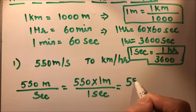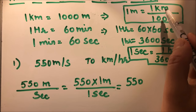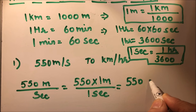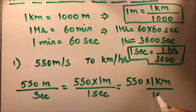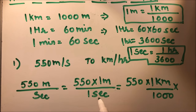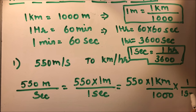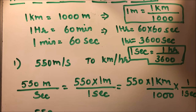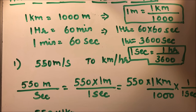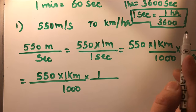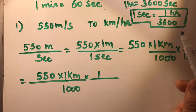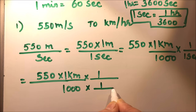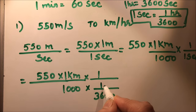Now, in place of meter we want kilometer, so we will write meter in terms of kilometer, which is one kilometer over thousand. And for one second, since we want kilometer per hour, we will write one second in terms of hour, which is one hour over 3600. So we multiply by one kilometer over thousand, and one over 3600 with one hour.